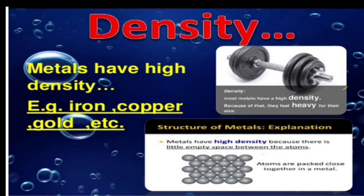Next, about density — metals have high density. The weight of these metals is very high because they are in the form of solids. In solids, all the atoms are packed very tightly. There is no motion of particles and no empty space between each particle. Due to this reason, metals are in the form of solids and their density is more.